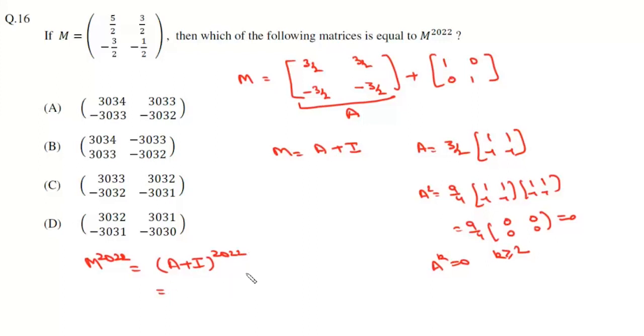Now if we expand it using the binomial theorem, we can write 2022 C0 I to the power 2022, plus 2022 C1 I to the power 2021 into A, and plus for all other expressions A to the power k will be 0, so all these matrices will be null matrices.